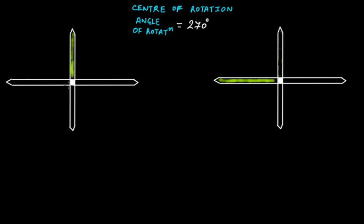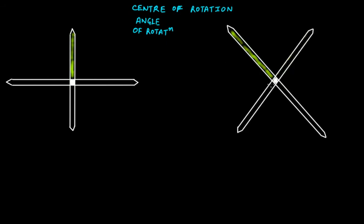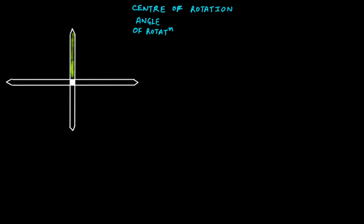They are again exactly the same. We rotate again with 45 degrees and it's again not symmetrical. We rotate again with 45 degrees and now it has completely rotated to 360 degrees. If you notice, this is a complete rotation of 360 degrees — it started from this position and ended here. At an angle of rotation of 360 degrees, these two figures are exactly the same again, showing rotational symmetry.